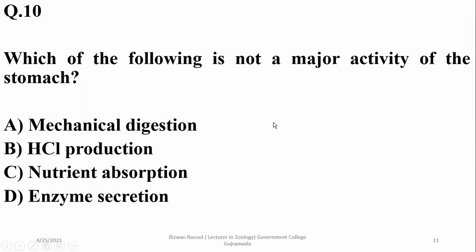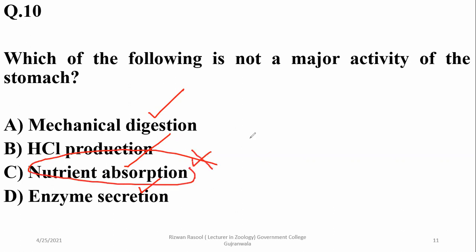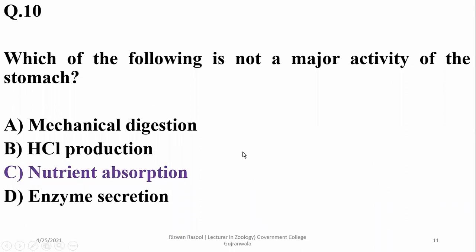Which of the following is not a major activity of the stomach? The stomach is involved in HCl production, mechanical digestion, and secretion of some enzymes. However, nutrient absorption is not a major function of the stomach. So the answer is charlie.